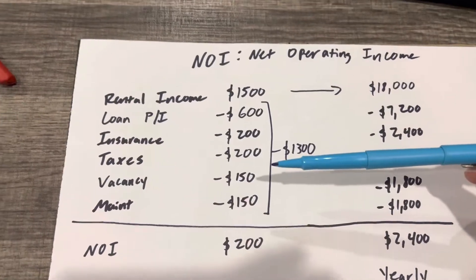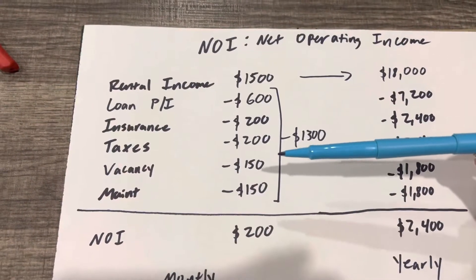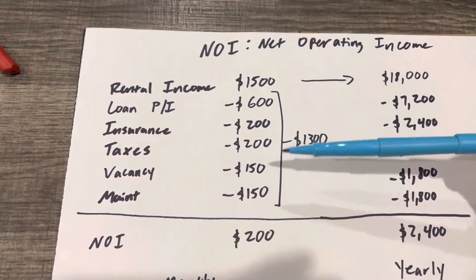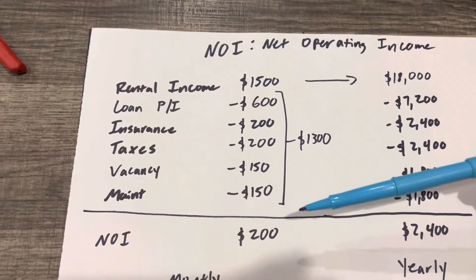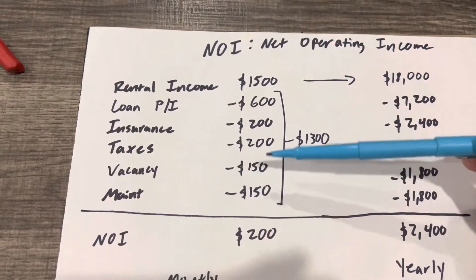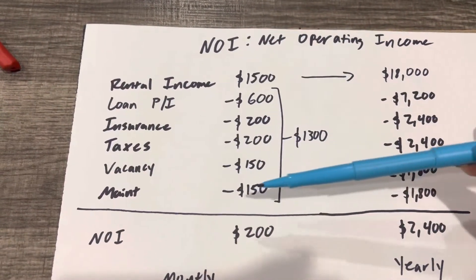And then we always have cash reserves — no ifs, ands, or buts. If you're new and starting out, you want to set this at 10%: 10% vacancy and 10% maintenance.